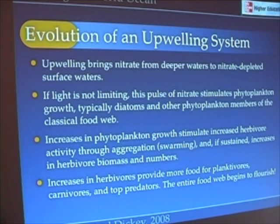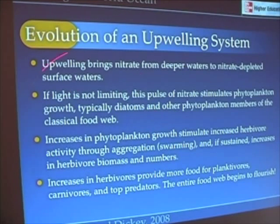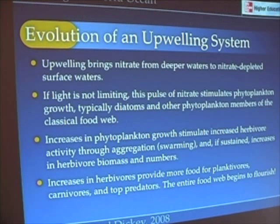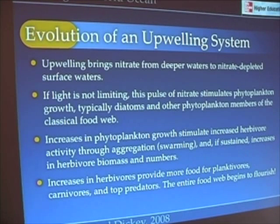That stimulation of the bloom in phytoplankton, particularly diatoms, stimulates increased activity of zooplankton. Zooplankton will swarm and aggregate and begin to increase in numbers as well. As we have more zooplankton, we have more planktivores, and the whole food web begins to flourish.